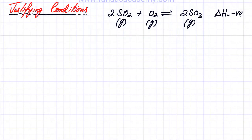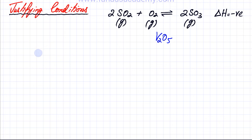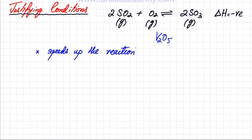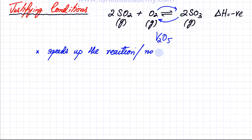The last thing to justify is the use of the catalyst, which was vanadium pentoxide — a transition metal compound, and transition metal compounds make very good catalysts. A catalyst speeds up the reaction, and importantly, it speeds up both the forward and backward reactions equally. So it doesn't affect the equilibrium position.